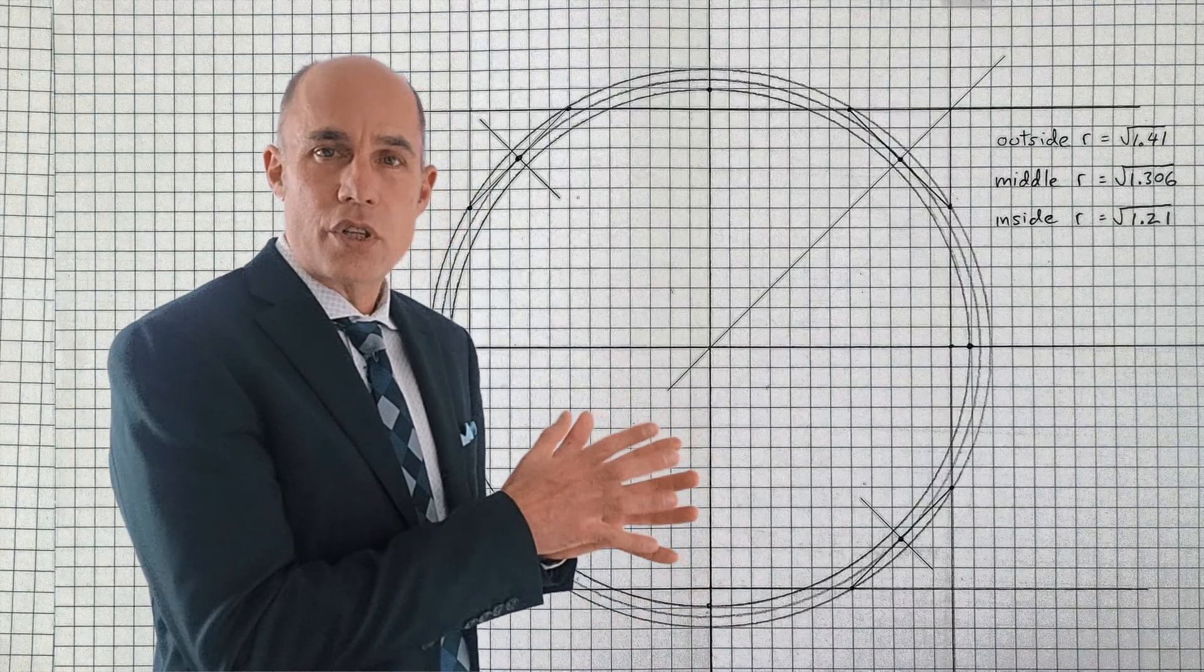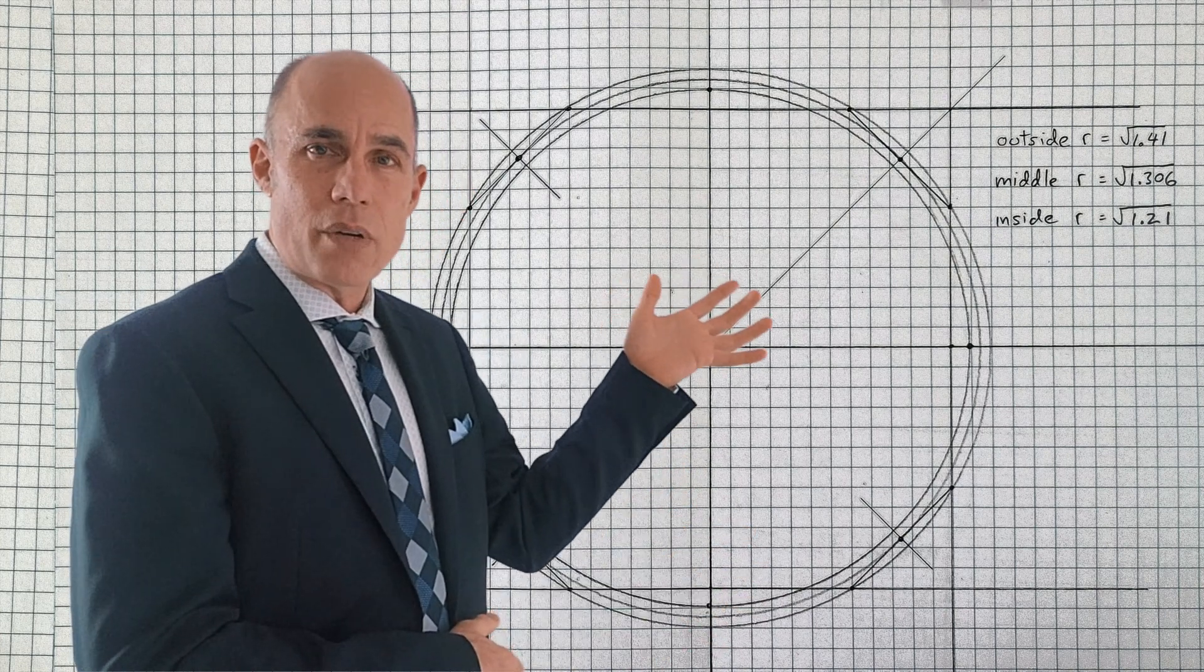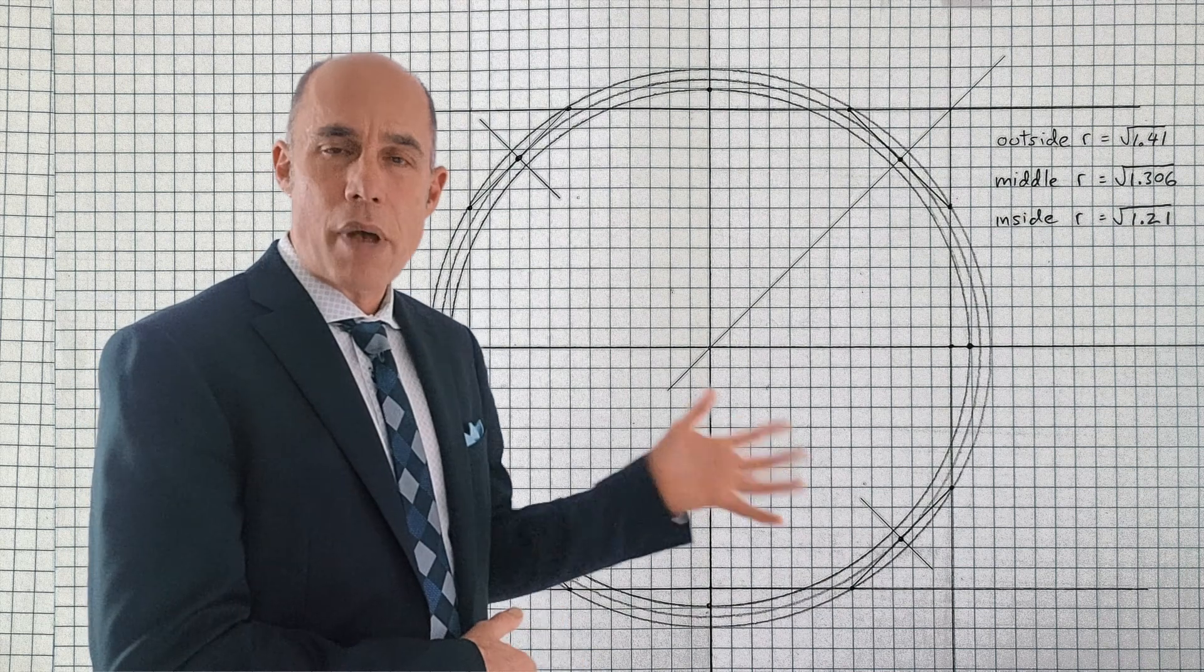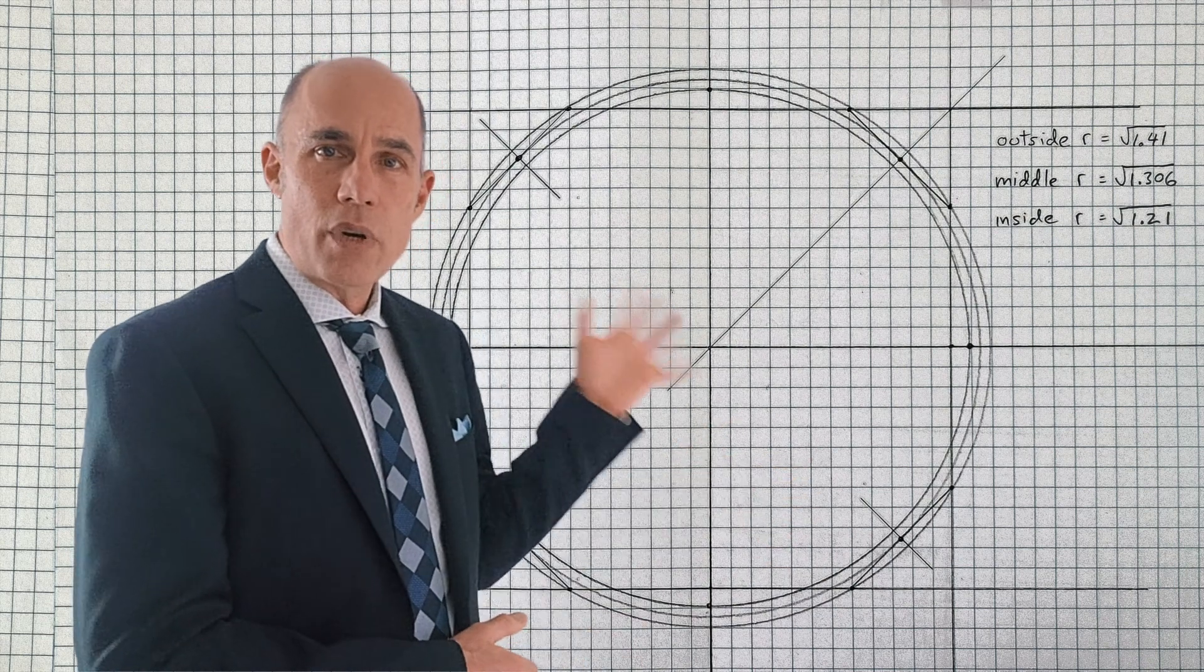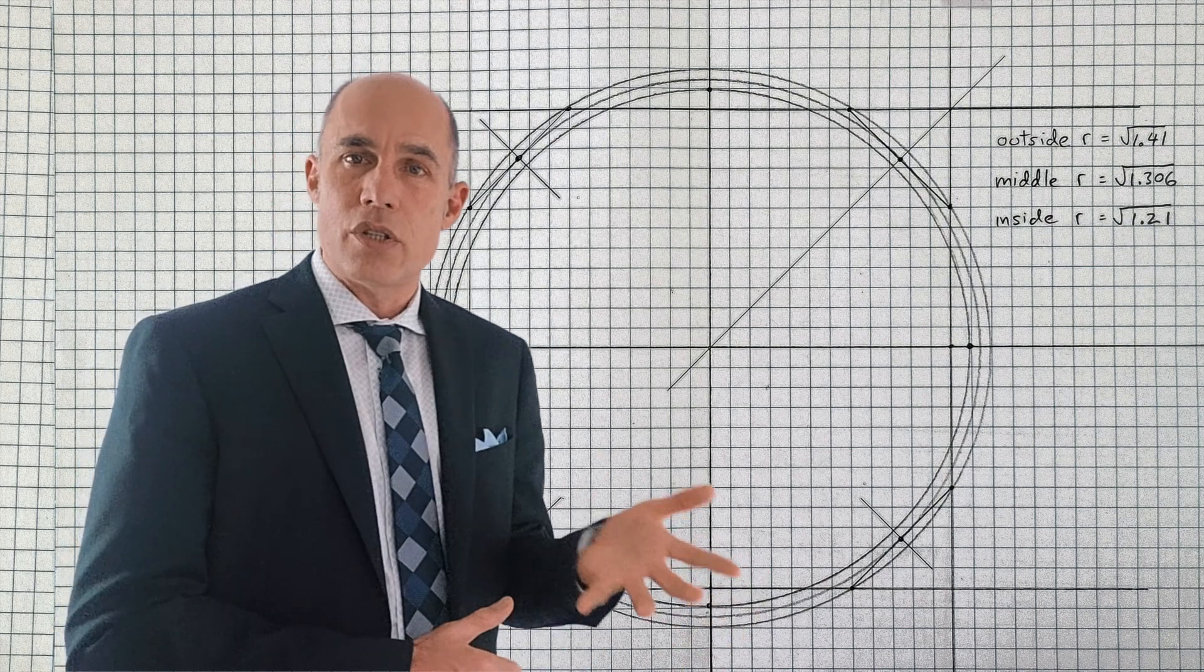So we can look at all three circles together. That's what that looks like and we can see there's some real symmetry there, a real pattern evolving where the outer ring is √1.41 and the inner ring is √1.21.